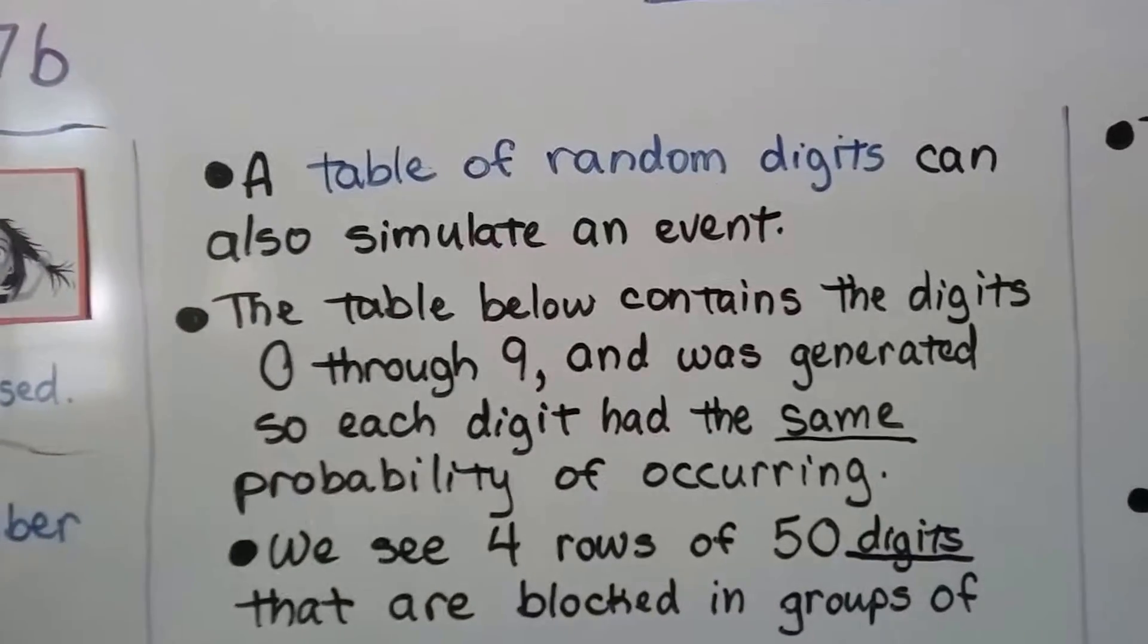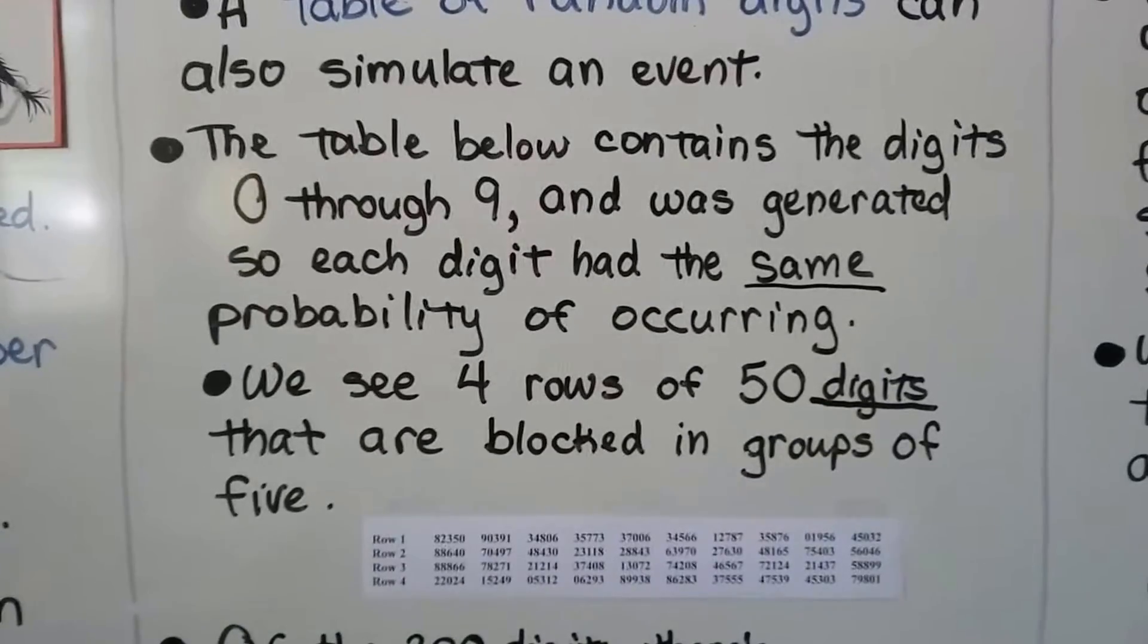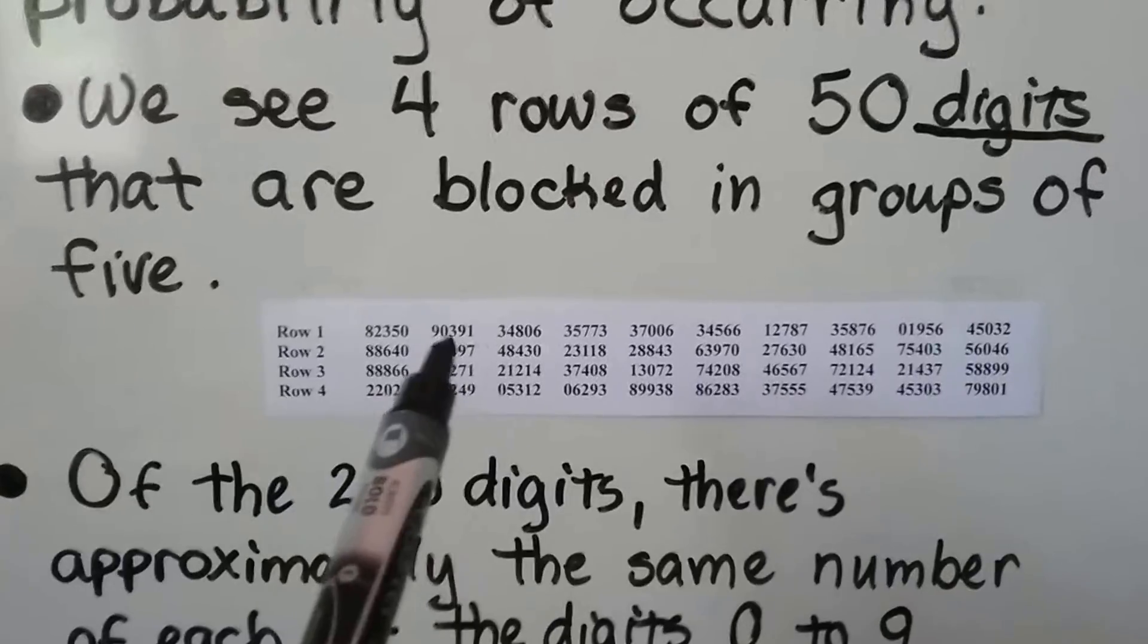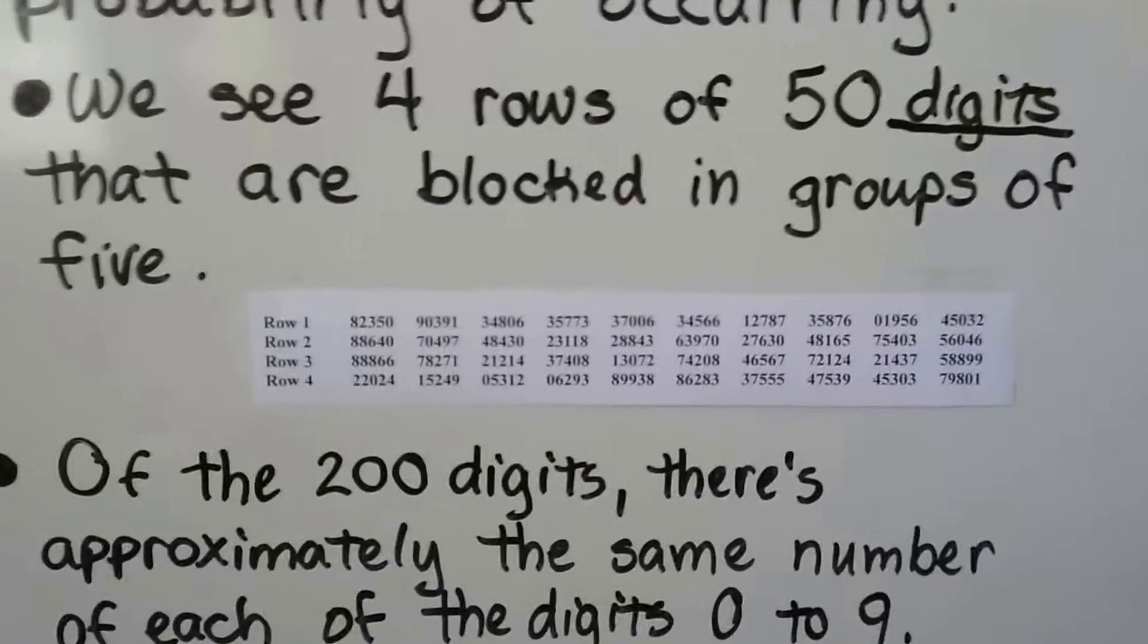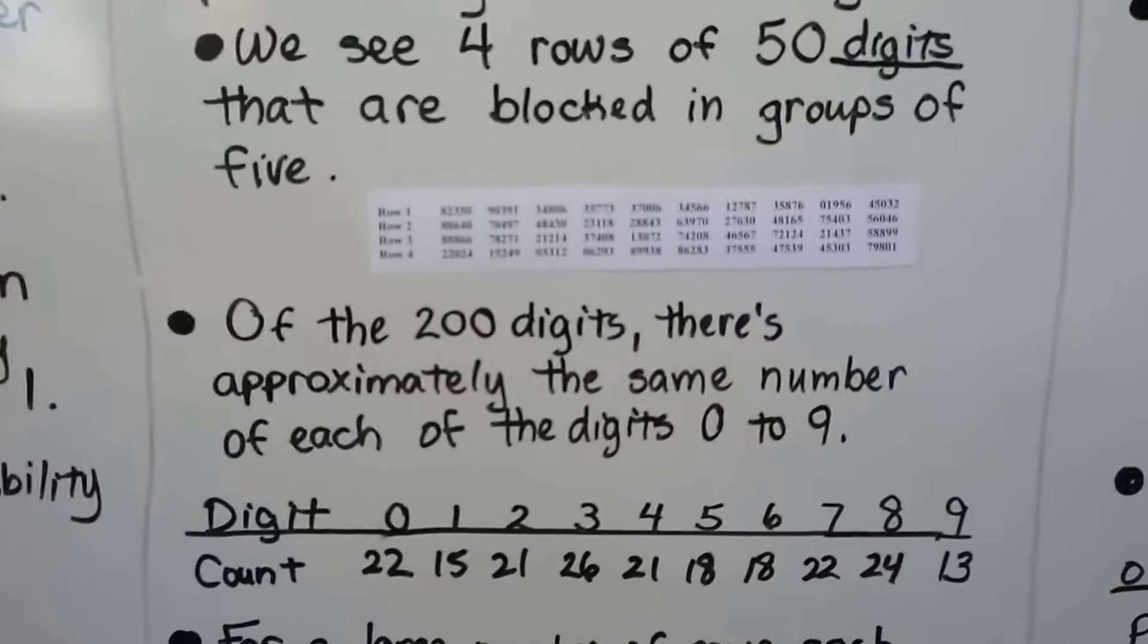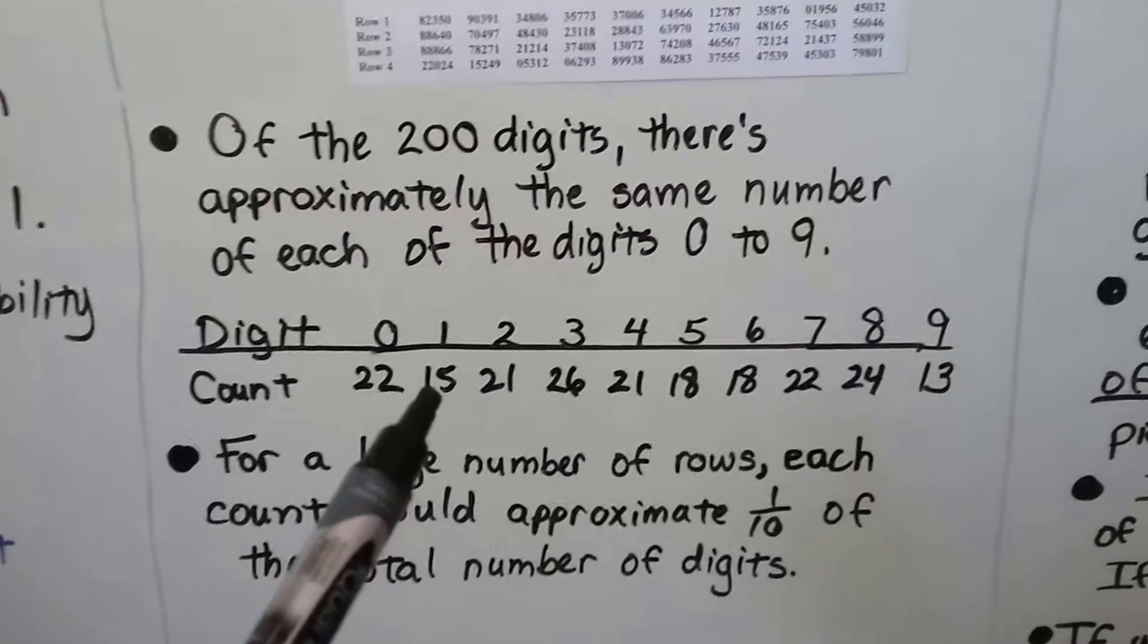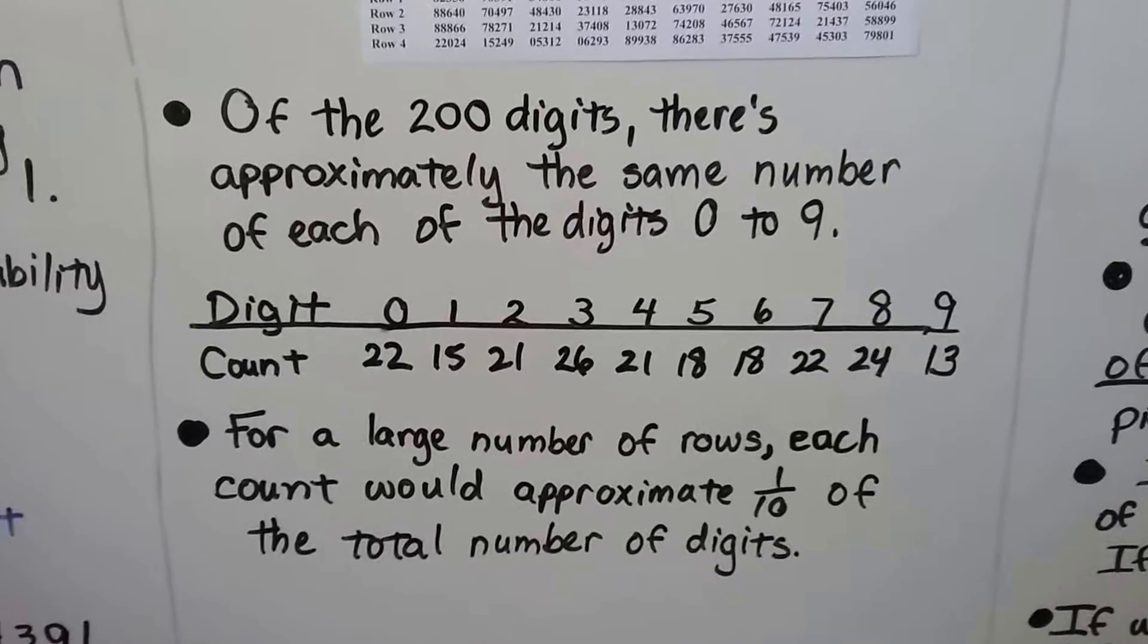A table of random digits can also simulate an event. The table below contains the digits 0 through 9 and was generated so each digit had the same probability of occurring. So we see four rows of 50 digits that are grouped and blocked in fives. We can see there's 5, 10, 15, 20, 25, 30, 35, 40, 45, 50 digits in each row. So if there's 50 digits in each row and you have four rows, that's 200 digits. And of 200 digits, there's approximately the same number of each of the digits 0 through 9. So we can count them for the digit 0 that was 22 of them, for the digit 1 that was 15, and so on. And for a large number of rows, each count would approximate 1 tenth of the total number of digits.